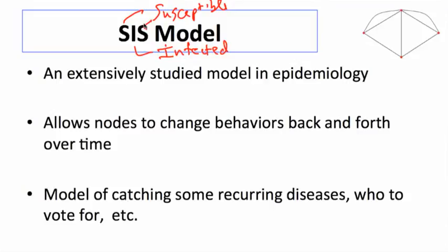So the idea here is you can recover. You can catch something, you become infected — so you're susceptible, you can catch it, you get it, then you recover. And this is something which you can catch over time. So it might be something like: I erase a virus from my computer, I'm susceptible again, now I can catch a new one, I catch it again, I erase it, and so forth.